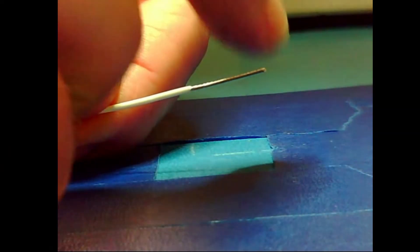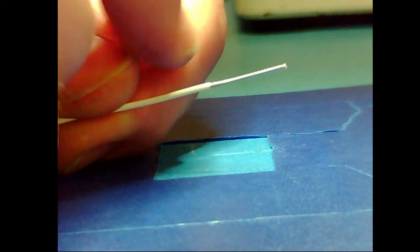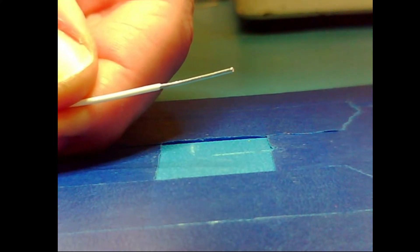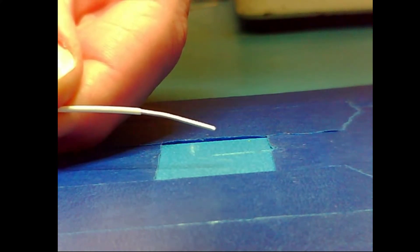After the insulation has been removed, inspect the wire to ensure that there are no cut, severed, stretched or otherwise damaged strands and that there is no insulation damage.